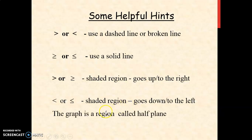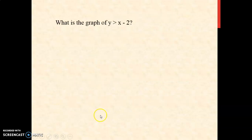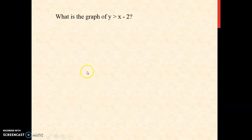The graph of a linear inequality is a region called a half-plane. To further understand this, we're going to consider the first example.